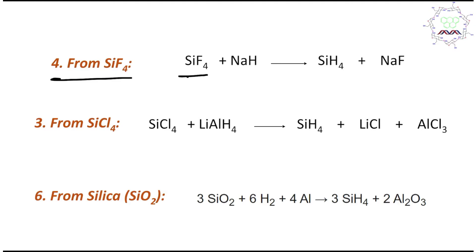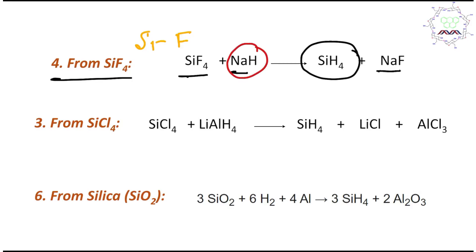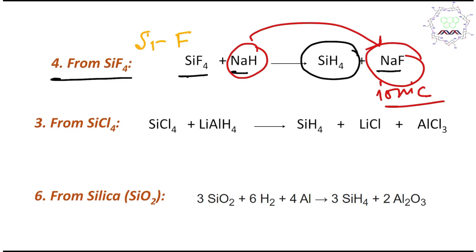A question may come to mind: the silicon-fluorine bond is very strong, so why does it break to form the silicon-hydrogen bond, which is not as strong? The reason is that the other reactant, sodium hydride, is also an unstable reagent, and from that, sodium fluoride — a very stable ionic compound — is formed. Overall, the reaction becomes possible. So before concluding anything about a particular reaction, please focus on the overall reaction, not just a particular molecule.